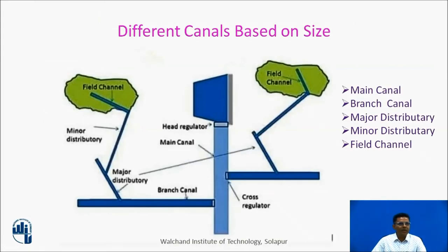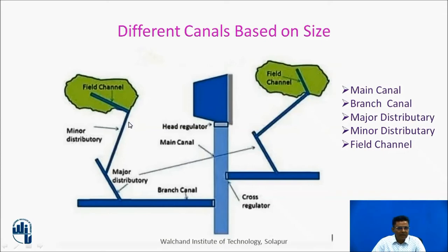In the schematic of different canals based on size: from the reservoir, a head regulator admits water into the main canal. From the main canal, a branch canal starts — with a cross regulator and head regulator provided. From the branch canal, a major distributory comes out; from the major distributory, a minor distributory comes out; and the minor distributory ultimately releases water into a field channel.